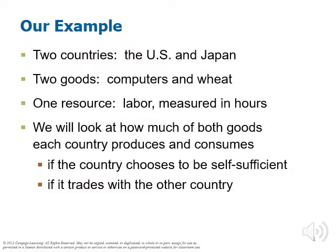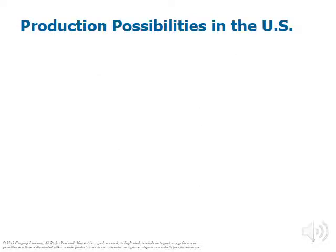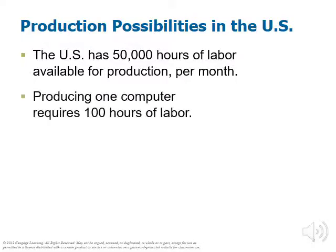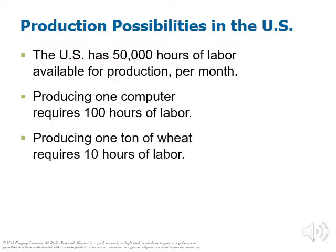Let's move forward to our example. In chapter two, you looked at the production possibilities frontier, and now we're going to build a production possibilities frontier for the United States. The U.S. is assumed to have 50,000 hours of labor. Producing one computer is going to cost 100 hours of labor. Producing one ton of wheat will cost 10 hours of labor. Let's use these figures to figure out all of the combinations of computers and wheat that the U.S. could possibly produce given its 50,000 hours of inputs.